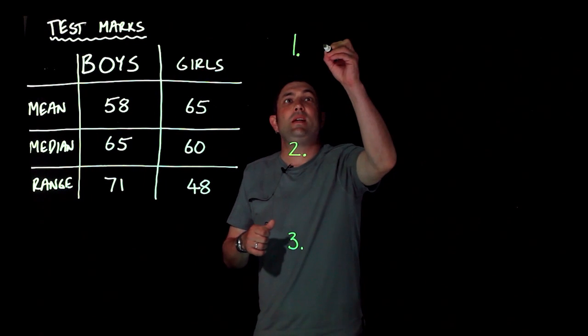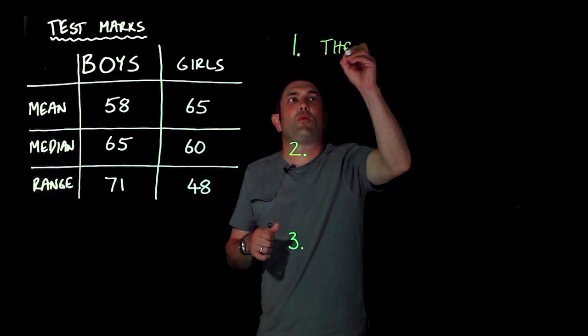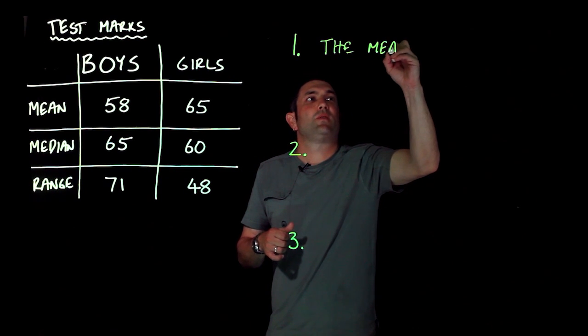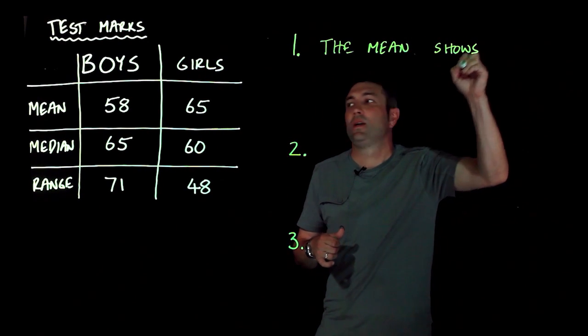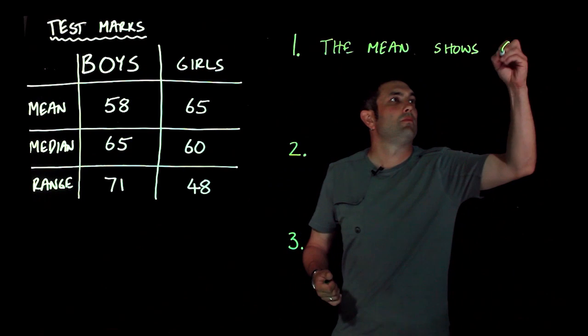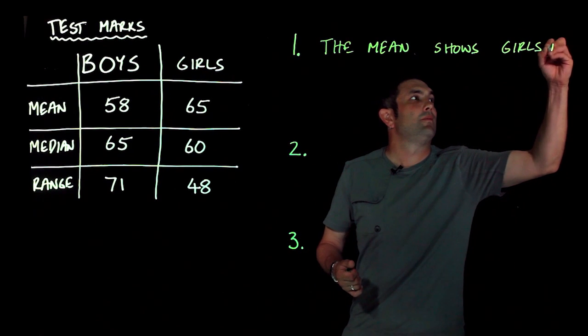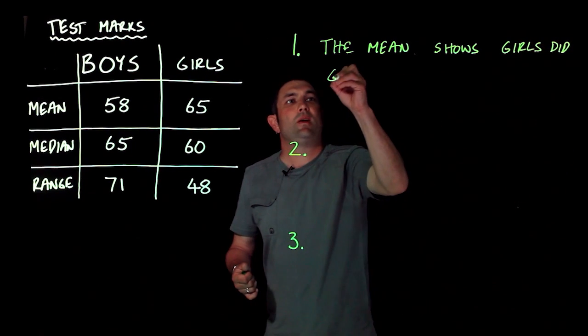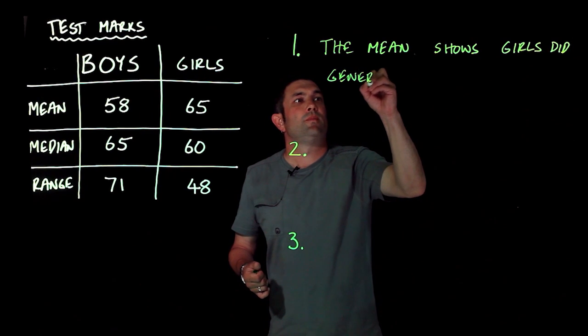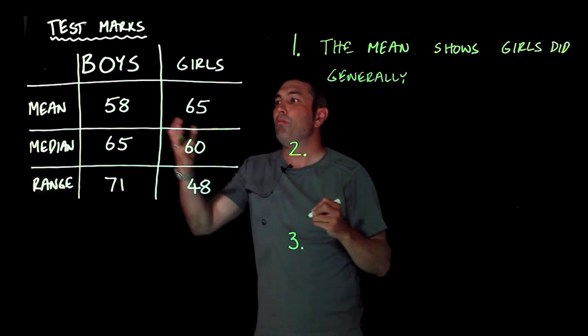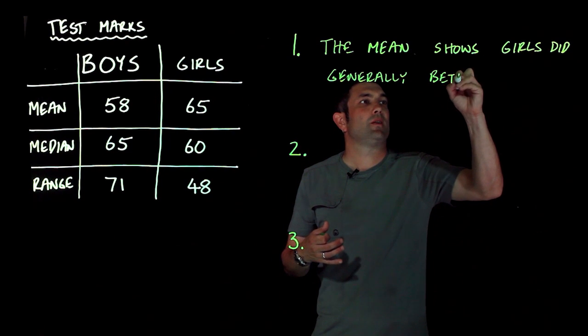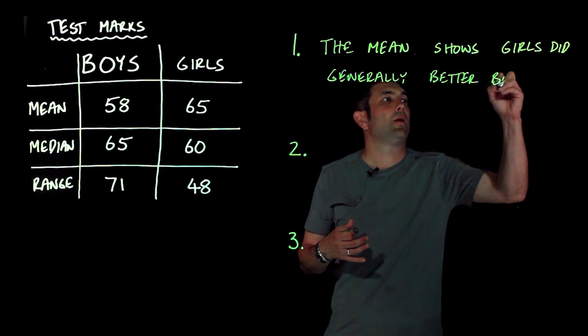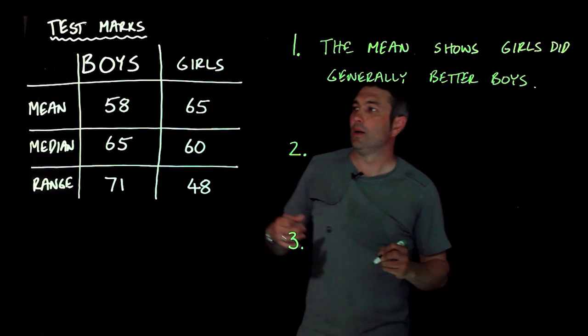Now the mean shows, because we've got three particular bits of data for each. The mean shows that girls did generally better, generally better than boys, because the mean we add up and we divide by how many there are. So better than boys. So that would be one comparison between the data.